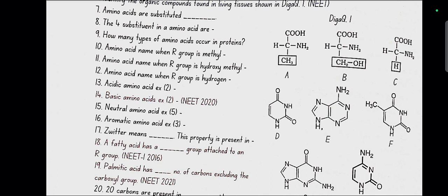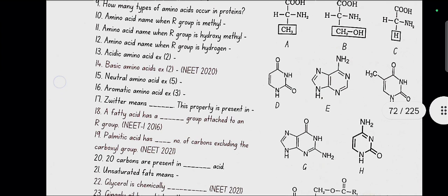Amino acid name when R group is methyl: alanine. Amino acid name when R group is hydroxymethyl: serine. Amino acid name when R group is hydrogen: glycine.